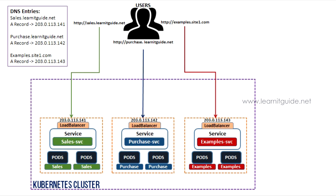Let's take an example to understand the difference. This architecture is without an Ingress Controller. You have applications running within your cluster, and to access them from outside you create a service — either NodePort or LoadBalancer. In this diagram we have used LoadBalancer for each application.